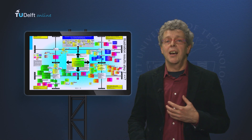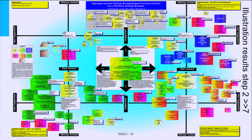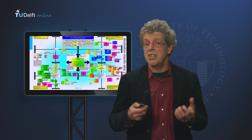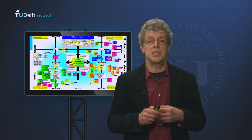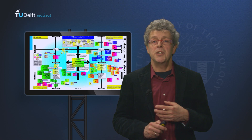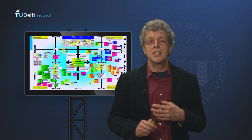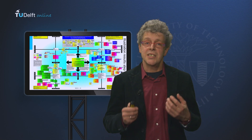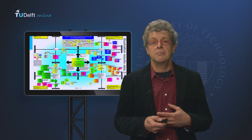Behind me on the screen you have seen this beautiful multicolored picture. It is a map representing the network of actors — mostly organizations involved in policy making on water quality issues. Each of these more than 80 colored hexagons represents an actor in this policy network.